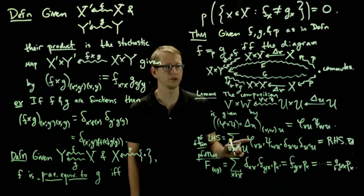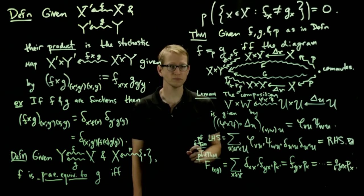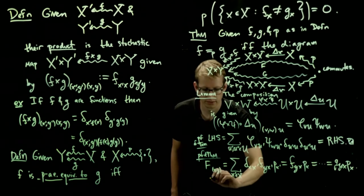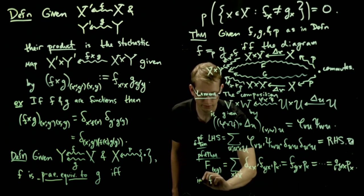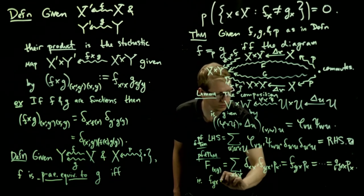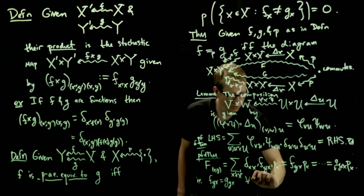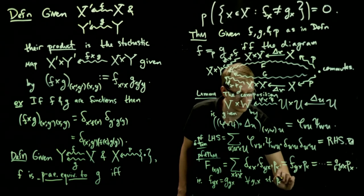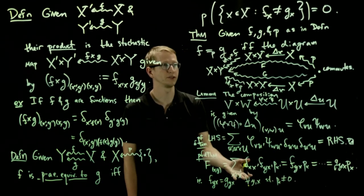And now let's compare these two sides. Now this is, by the way, true for all x, y. And when we compare these two sides, this exactly says that f_yx equals g_yx for all y and x such that p(x) is not equal to 0. That's what this equation allows us to conclude.